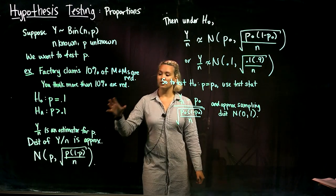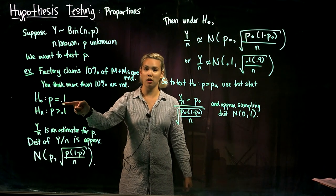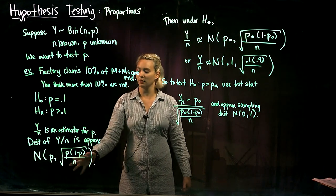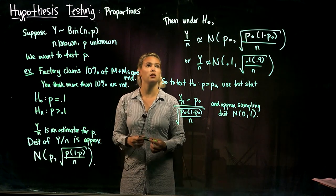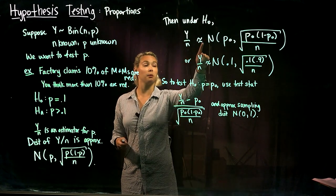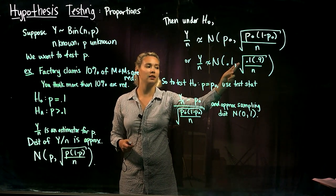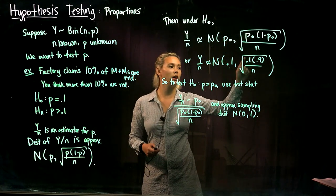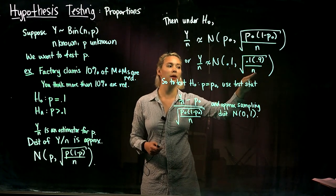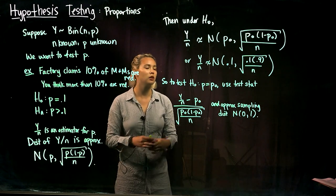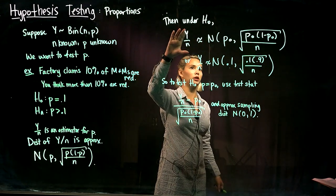Under the null hypothesis, under the claim that p equals 0.1, we can rewrite this and substitute out the p's with 0.1. So then our sample proportion is approximately normally distributed with mean 0.1 and standard error square root of 0.1 times 1 minus 0.1 divided by the sample size n. Here it is for our M&M example, and up here it's more generally written.